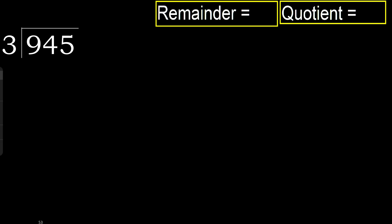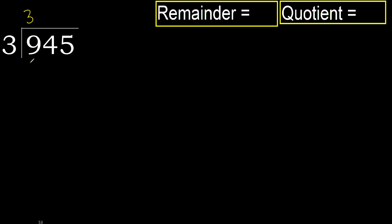945 divided by 3. 9 is not lesser than 9. 3 multiplied by which number is nearest to 9 but not greater? 3 multiplied by 4 is 12, which is greater. 3 multiplied by 3 is 9 — not greater. 9 minus 9 is 0.